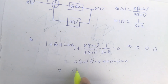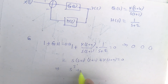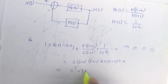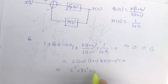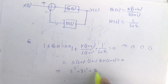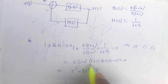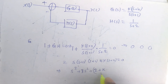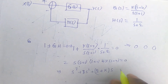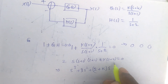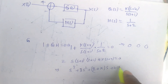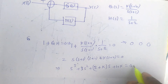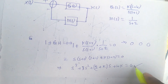Expanding this, the characteristic equation becomes: s³ + 3s² + (2+k)s + 4k = 0. This is the characteristic equation to which we will apply the Routh-Hurwitz criteria.